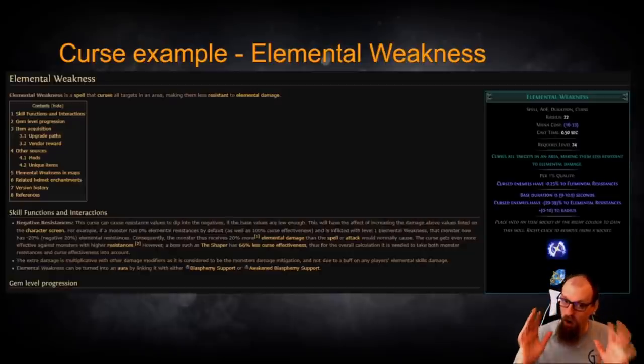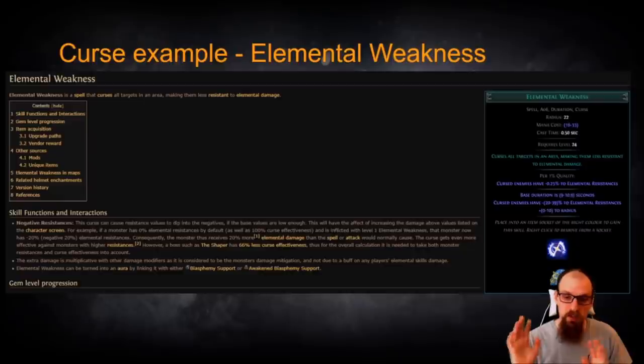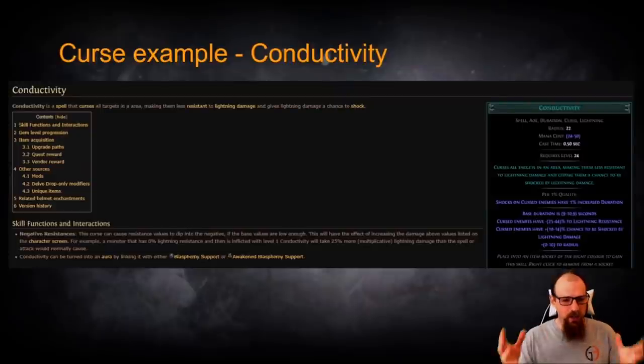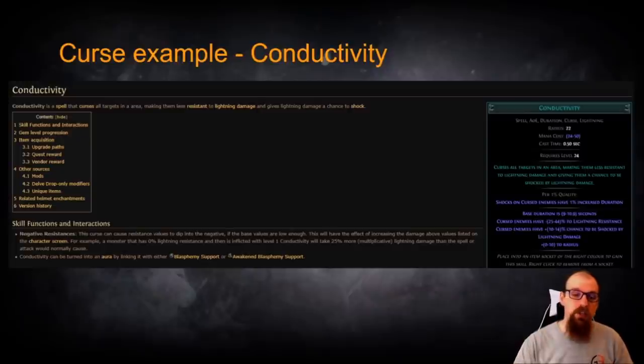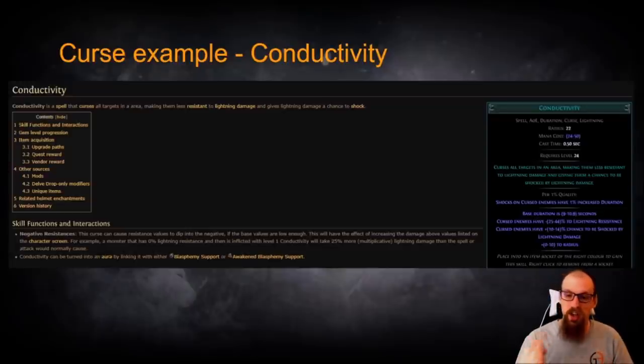Of course, there are always exceptions like the Shaper, like the Uber Elder and like Cirrus depending on their particular percent of less curse effectiveness against them. So we talked about Elemental Weakness which is of course generic reduction of Elemental Resistances but then of course there are three particular curses that are used for focusing resistances against particular types of Elemental Damage. Of course, they are Flammability, Frostbite and Conductivity. They all pretty much work similar to one another so we're just going to take a look at Conductivity for right now.